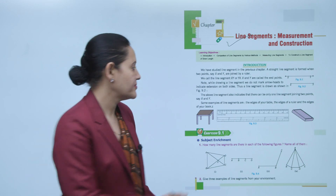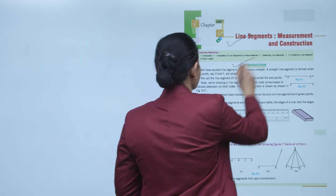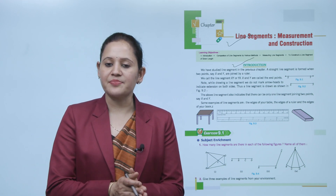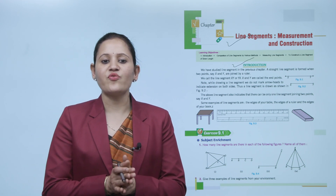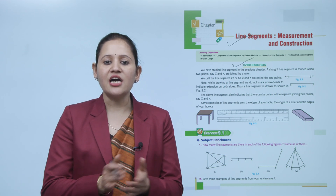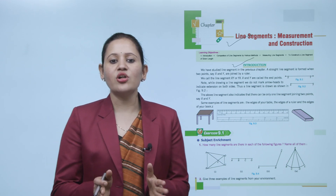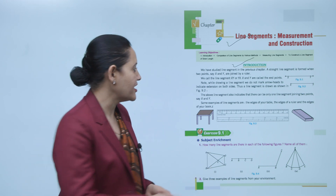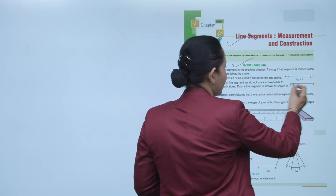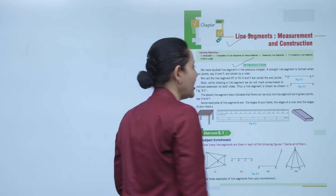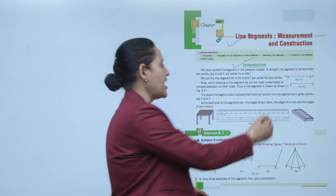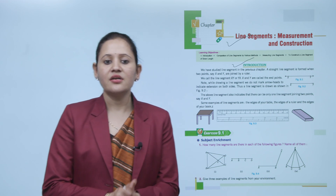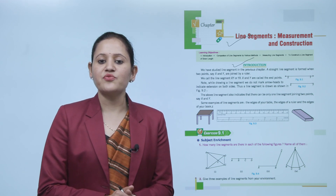Introduction: we have studied line segments in the previous chapter. A straight line segment is formed when two points, say X and Y, are joined by a ruler. We call it line segment XY or YX. X and Y are called the endpoints. This is the line segment XY, and X and Y are the endpoints.